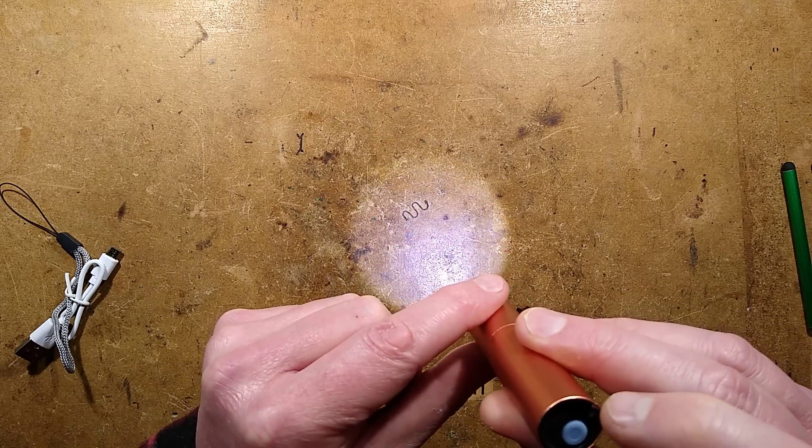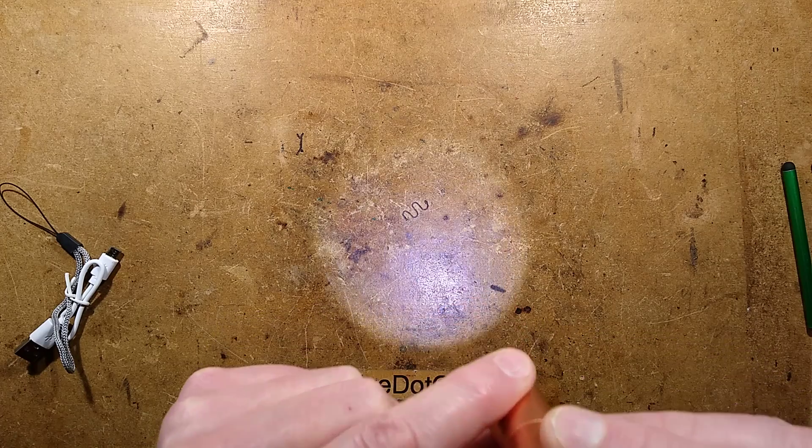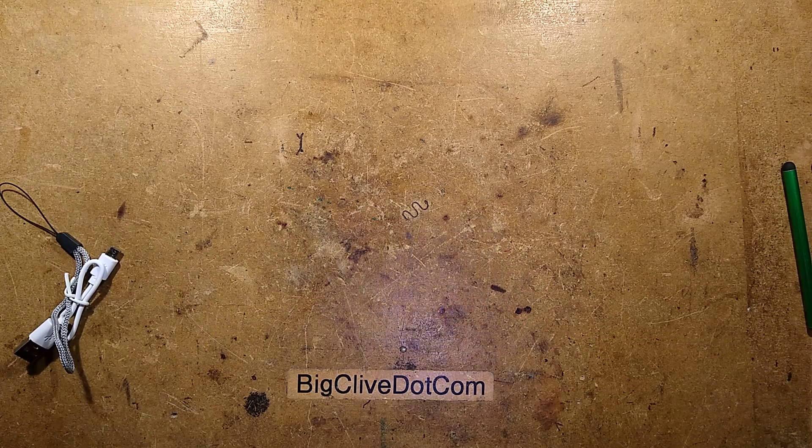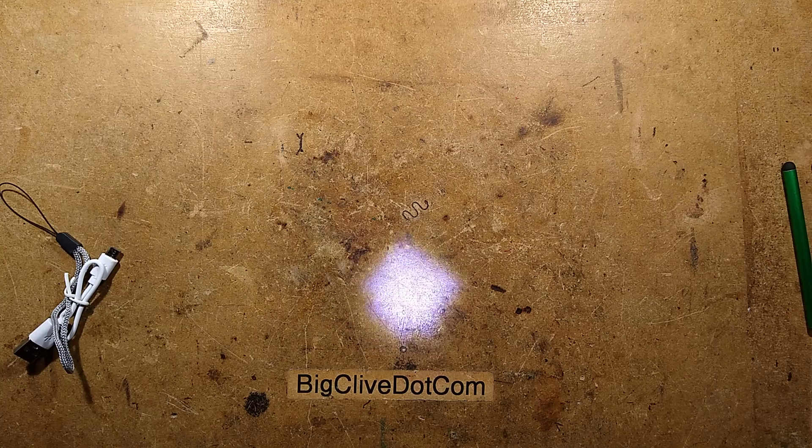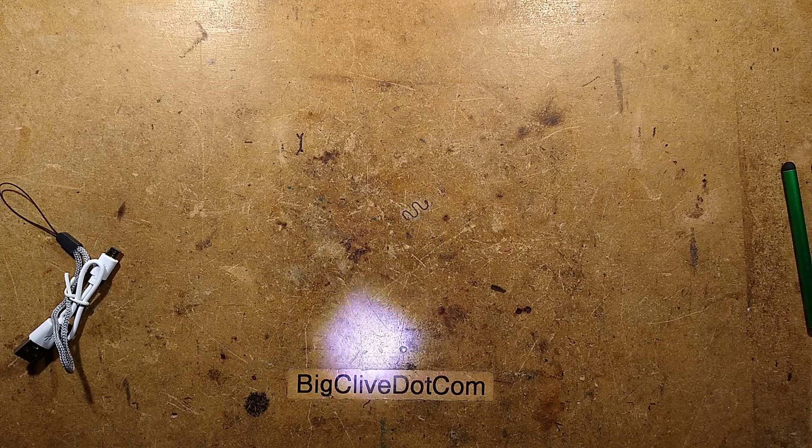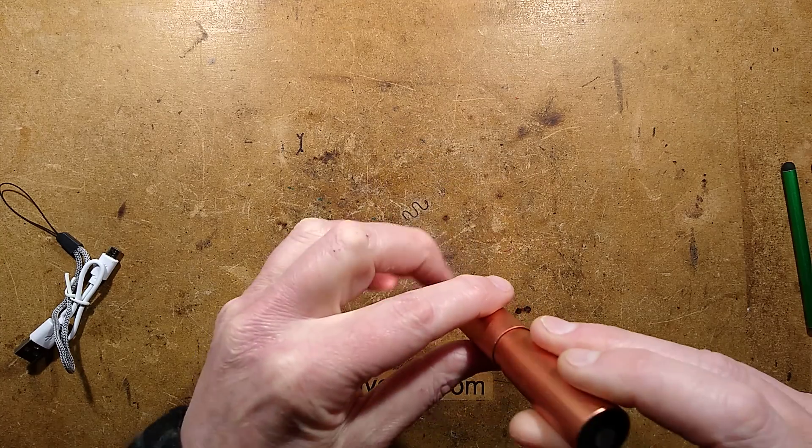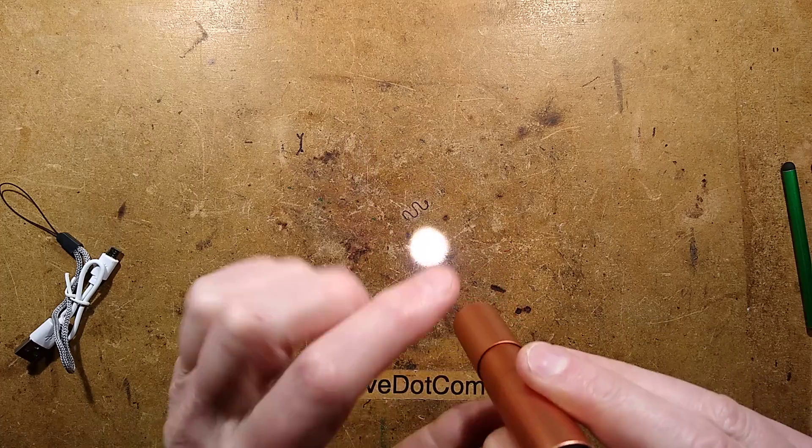It has three modes, and it's focusable. The focusing works pretty well, actually. I don't know if I can pull it back far enough to focus on the little chip inside. From a decent distance, you get the classic Cree knock-off type chip effect.